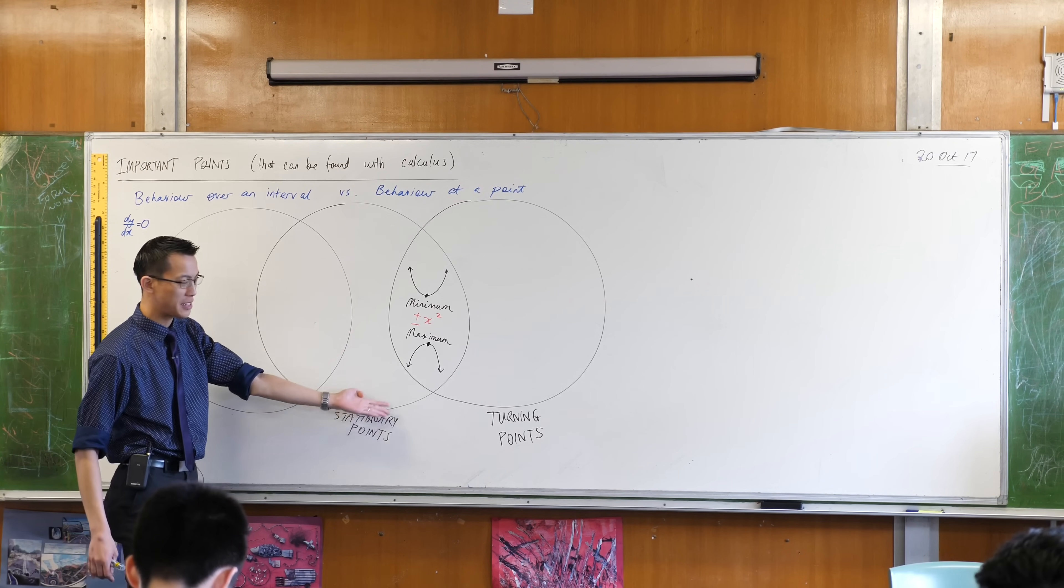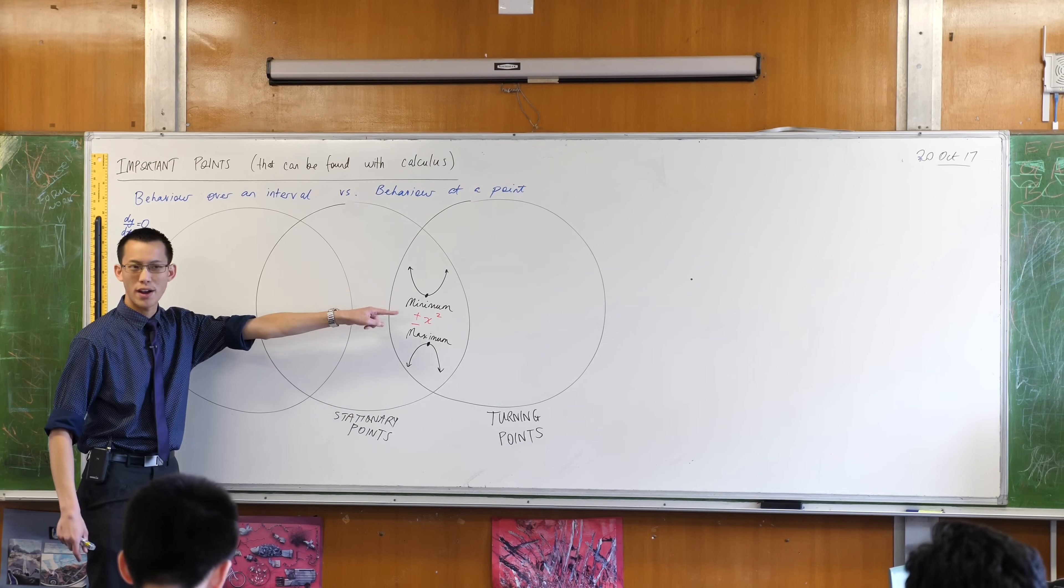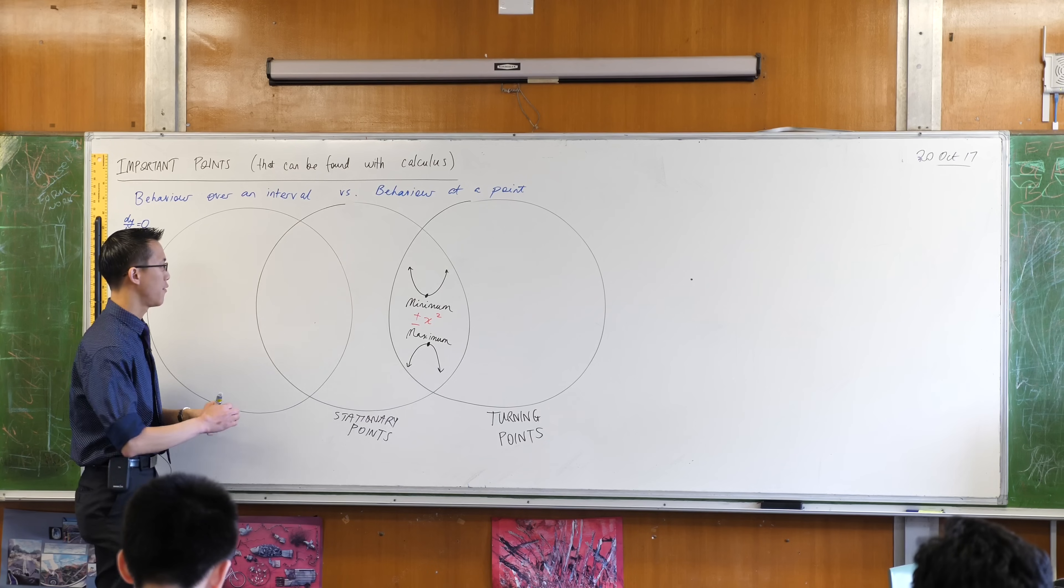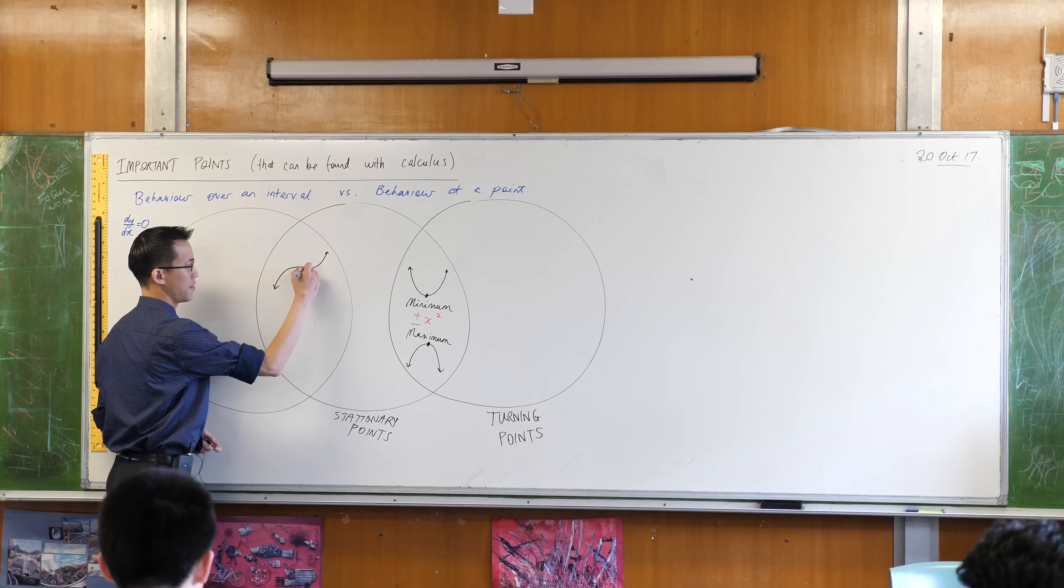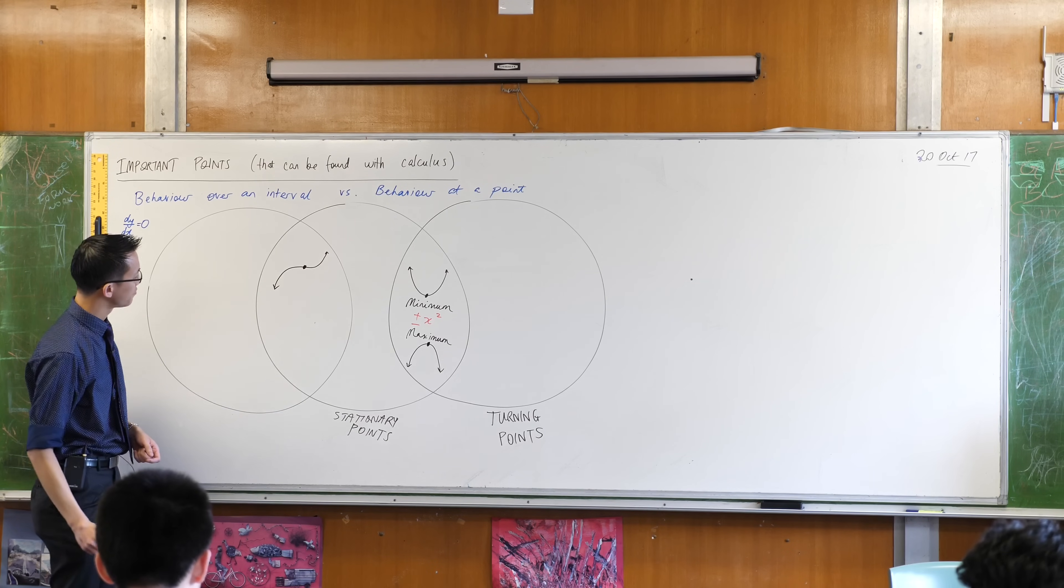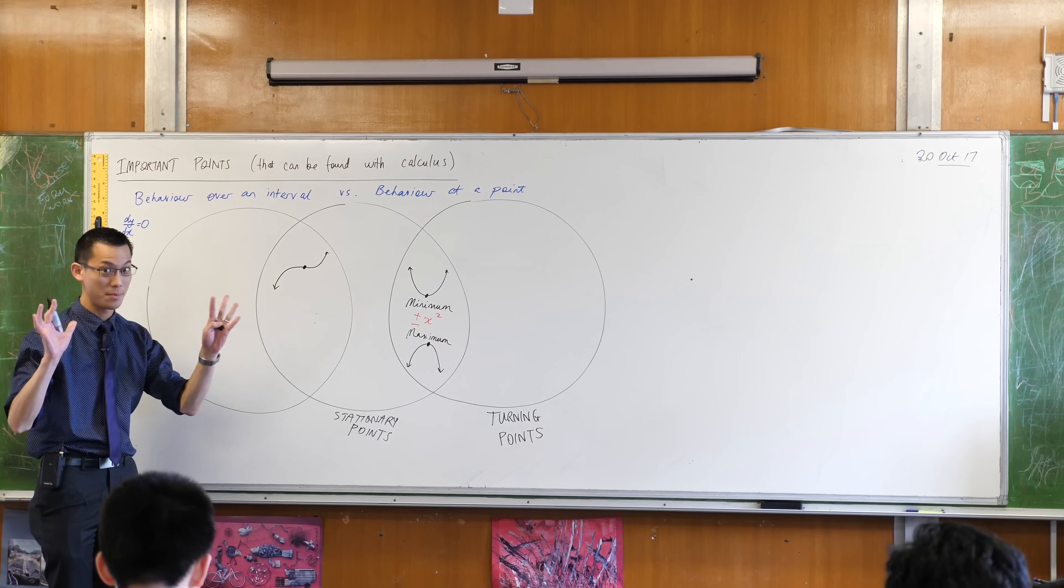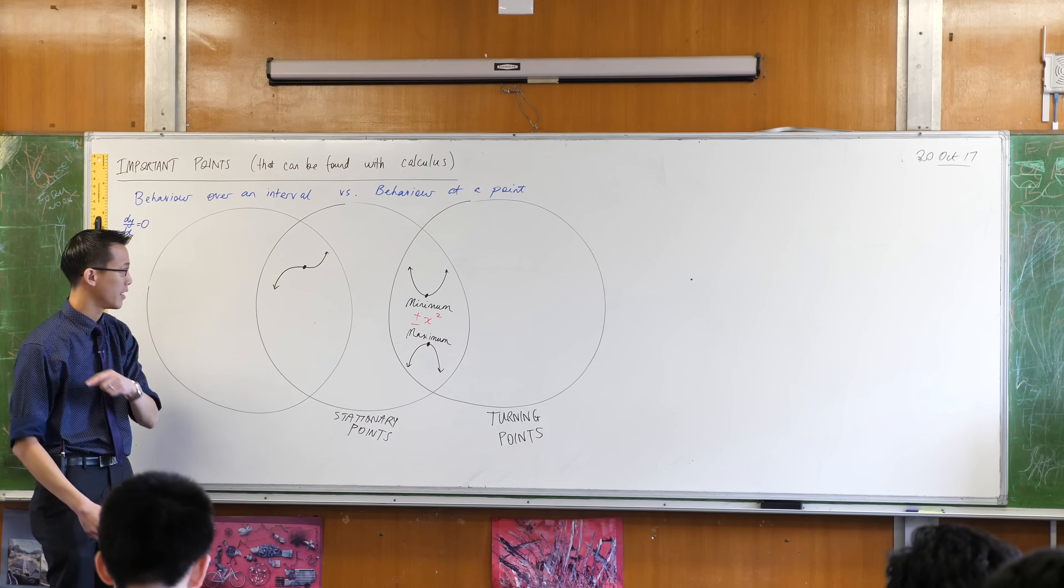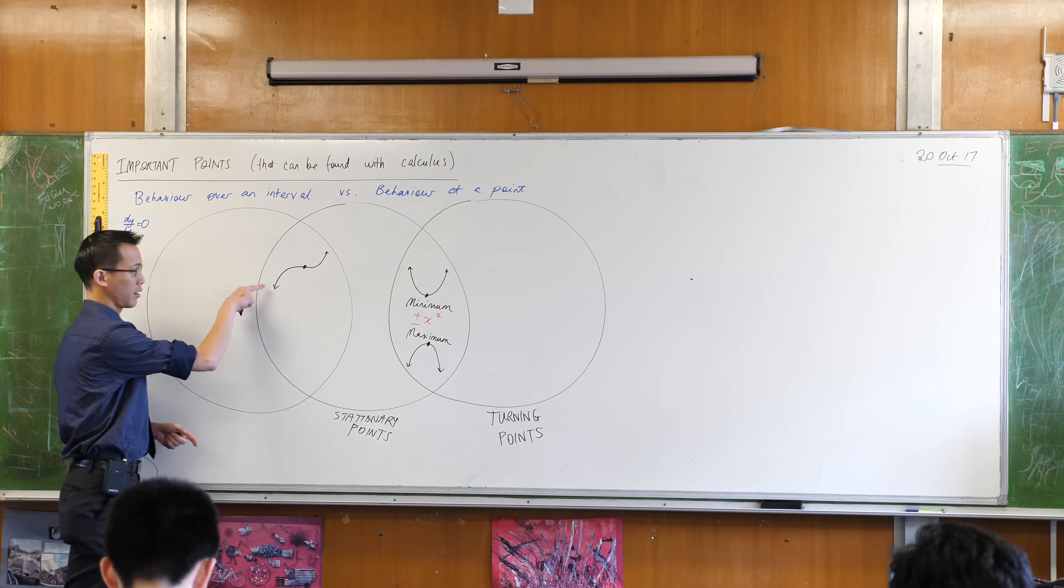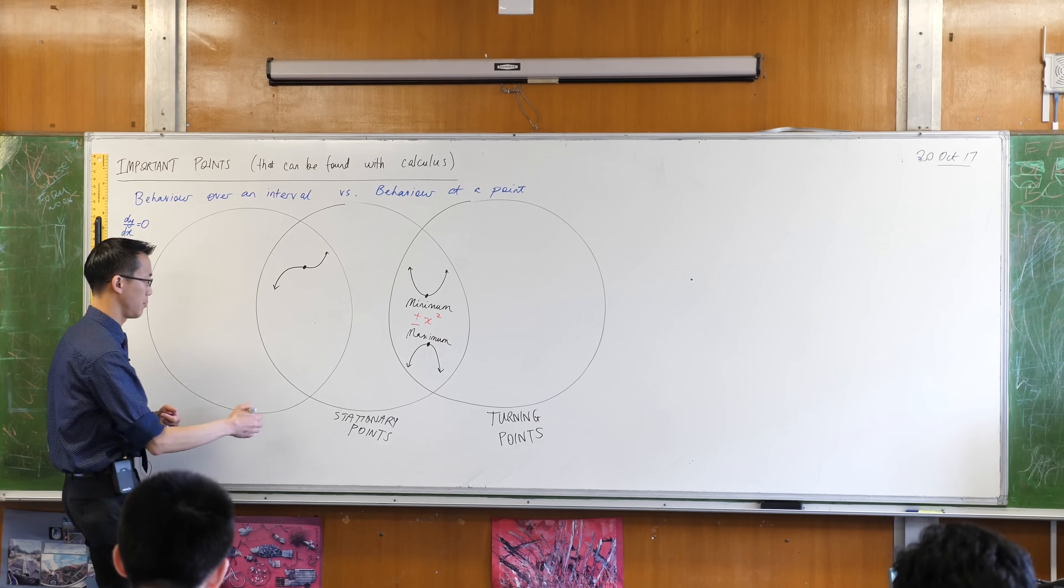These are not the only kinds of stationary points. There are stationary points that do not turn, and we can use very simple functions to illustrate this. For instance, this guy here—what curve do you know that looks something like that? This is a cubic, isn't it? I've got a cubic that's going upwards so it's increasing, but I can just as easily have a decreasing cubic.